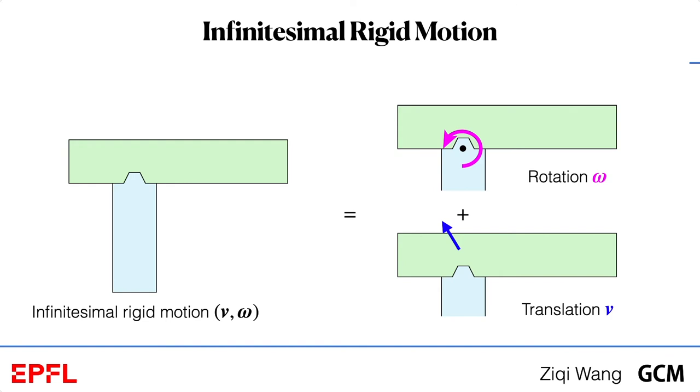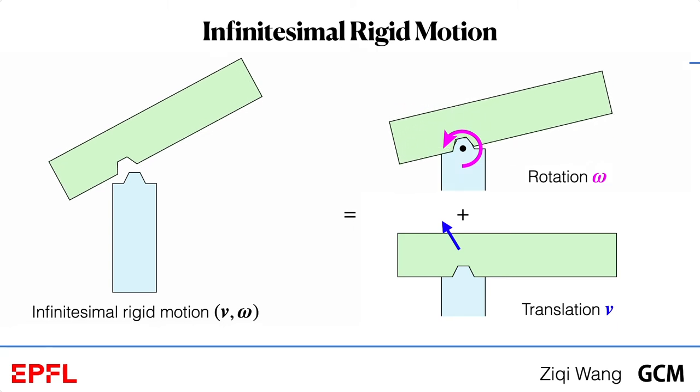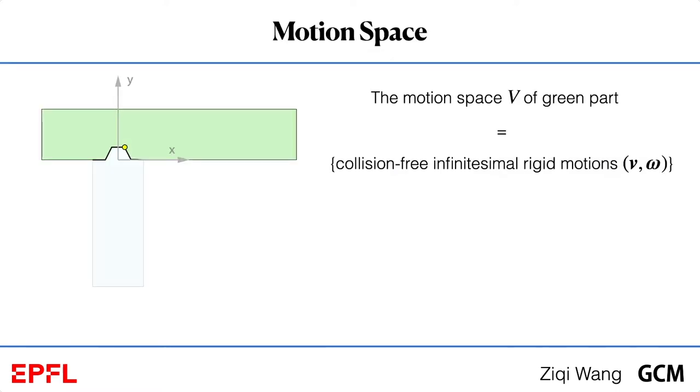The core is to measure the green part's collision-free movement. The motion we used for stability test is the infinitesimal rigid motion, which is composed of rotational part and translational part. Ideally, the motion should be infinitesimal. Here, the part moves in a short time period for visualization purpose. The motion space of the green part is equal to all collision-free infinitesimal motions that can take the green part out from the blue part. In 2D, since the green part has three degrees of freedom, its motion space is a 3D cone.